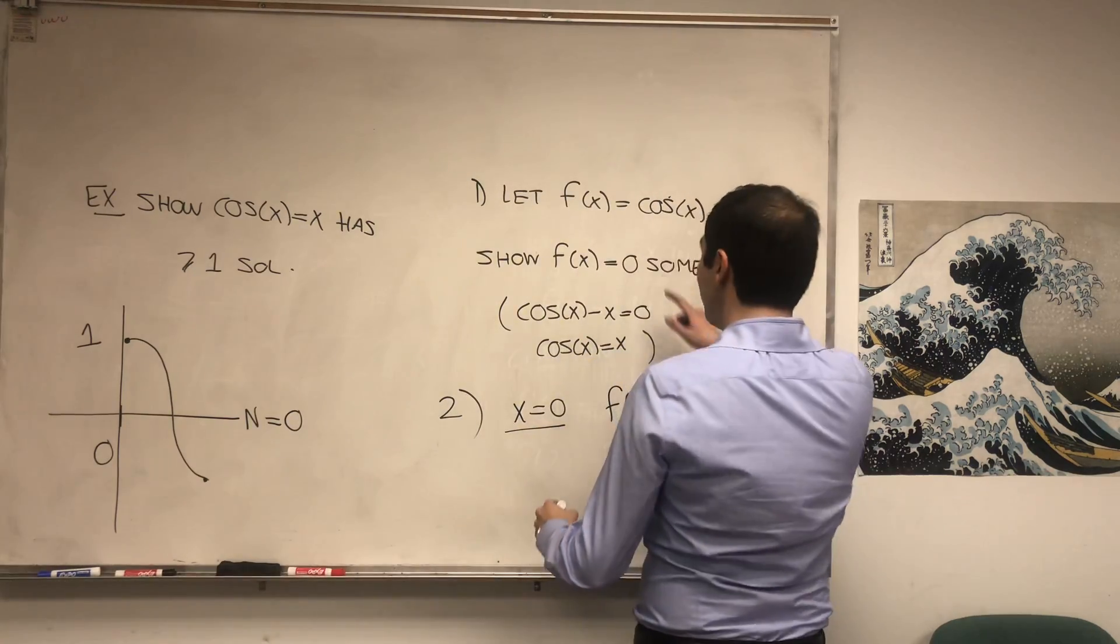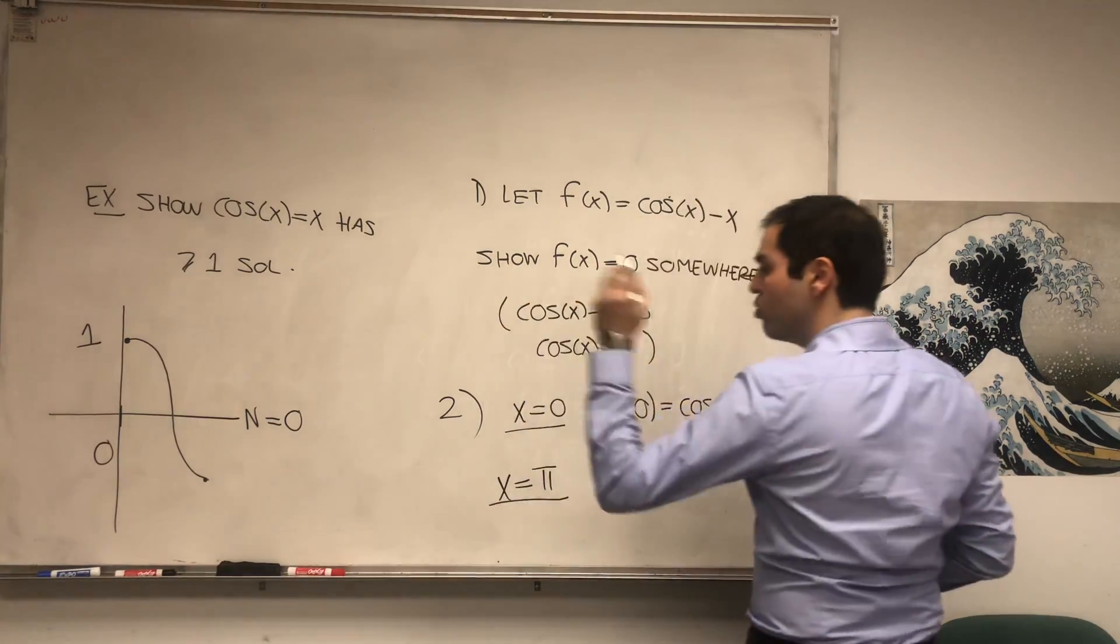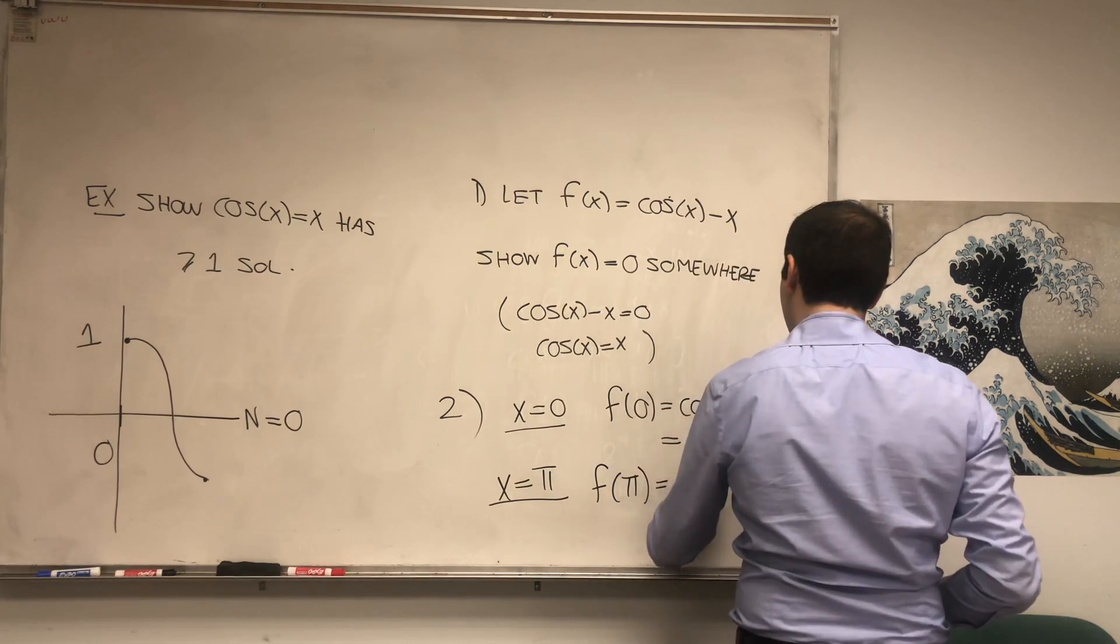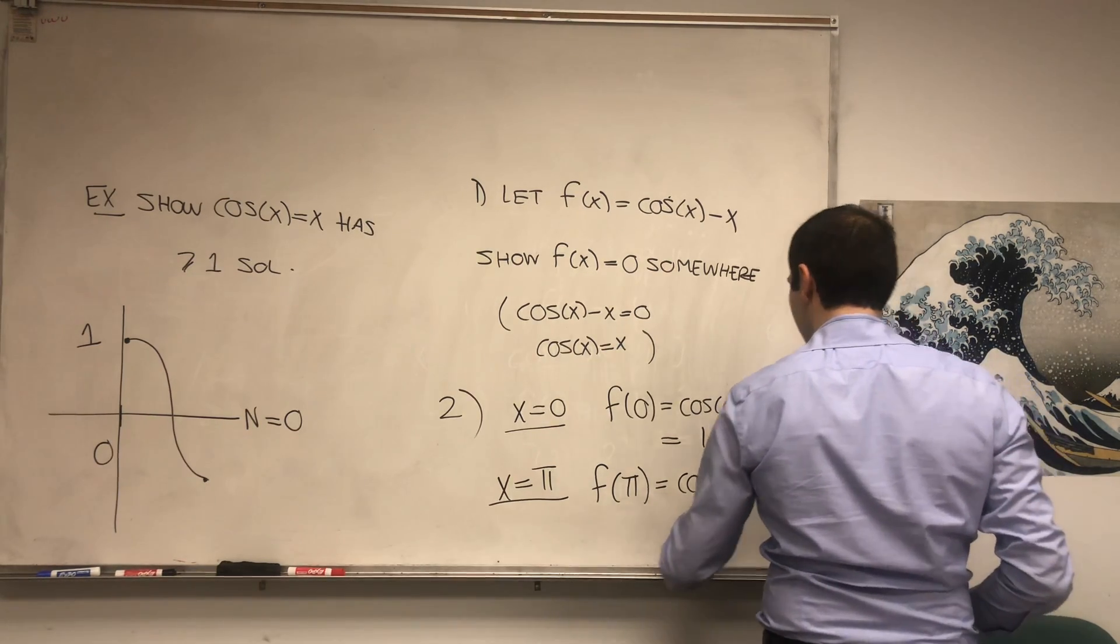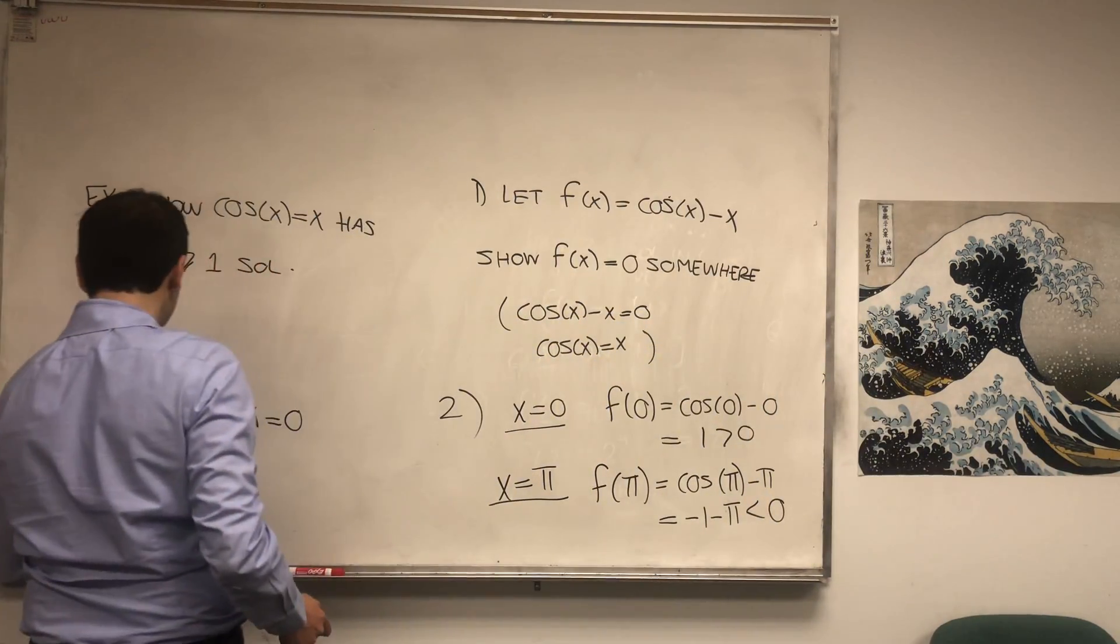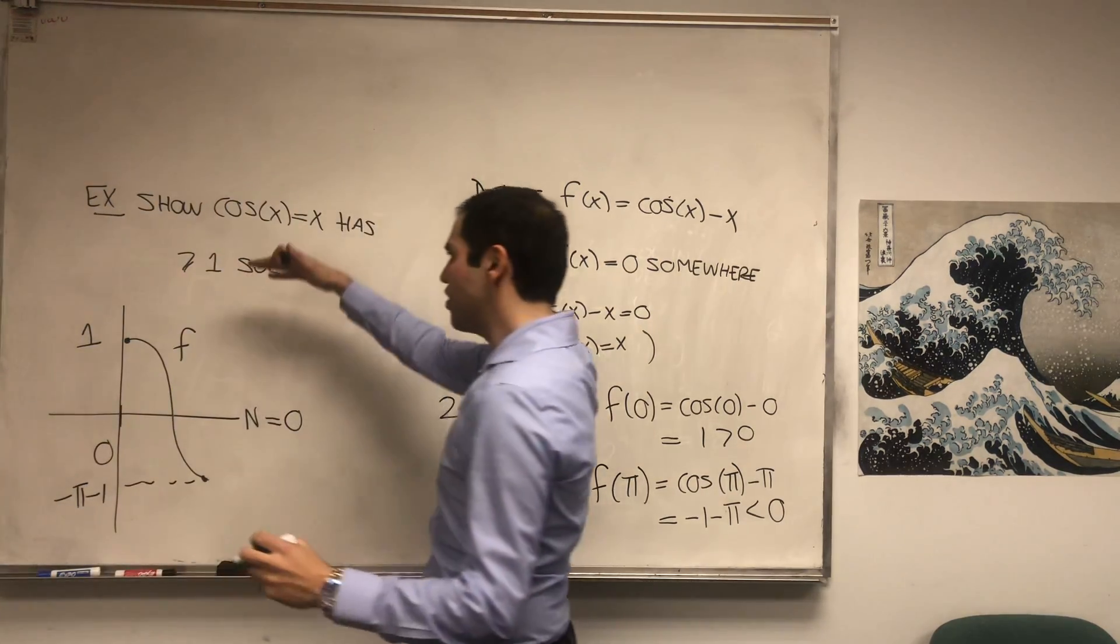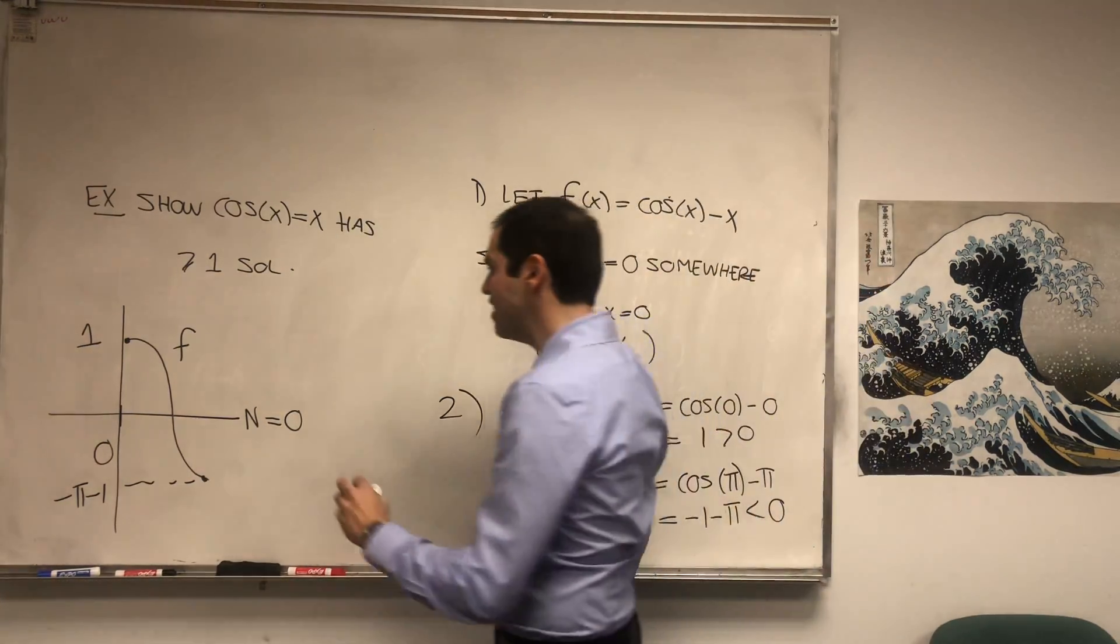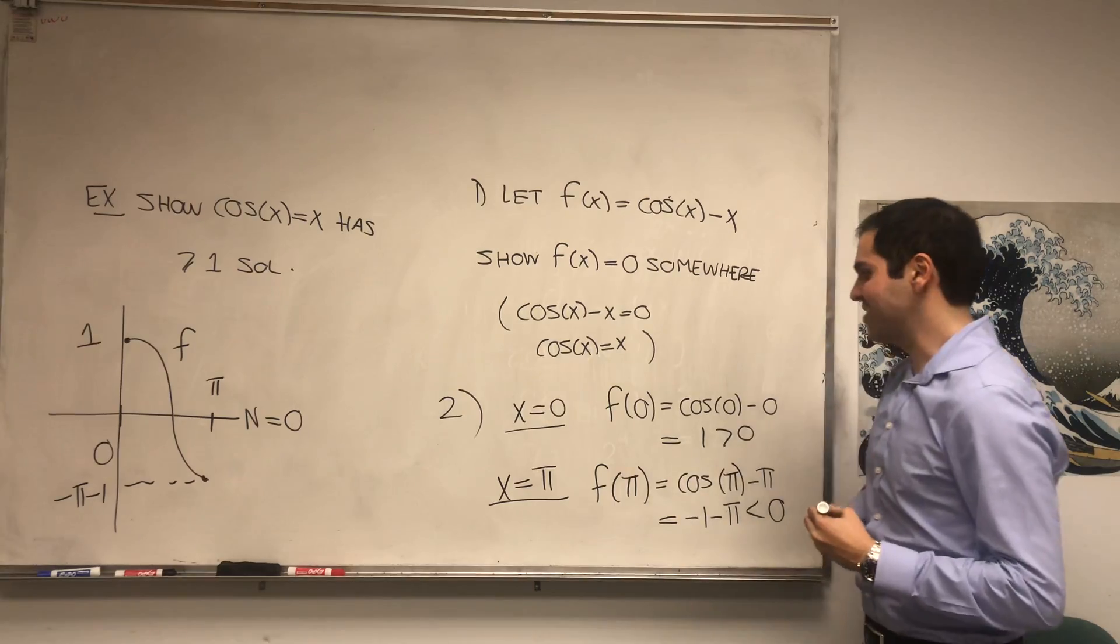And now, for instance, we have many choices, but let's pick π. You could also do π/2, completely fine. f(π), it's cos(π) minus π, and that's -1 - π, which is negative. So this point becomes -π - 1, which is negative. So you see, you have a continuous function that goes from a positive number to a negative number. So really, by the Intermediate Value Theorem, it has to cross the x-axis somewhere.